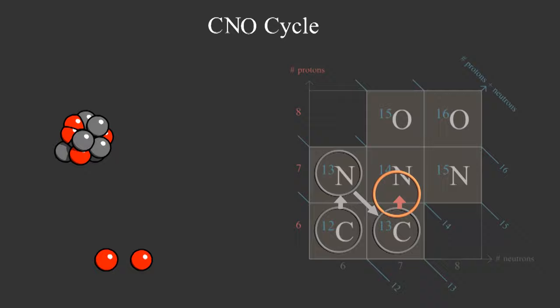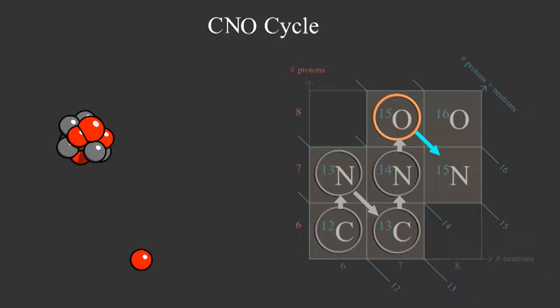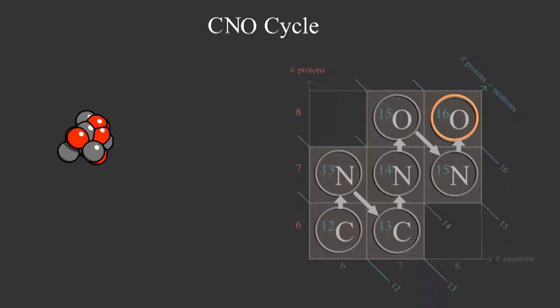Adding a proton makes nitrogen-14. Adding another one makes oxygen-15, which will decay to nitrogen-15. Finally, if we add one more proton, it will emit a helium nucleus and give us back the carbon we started with.